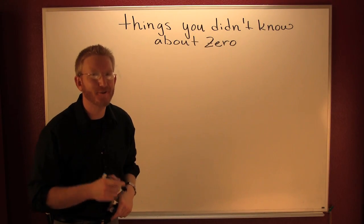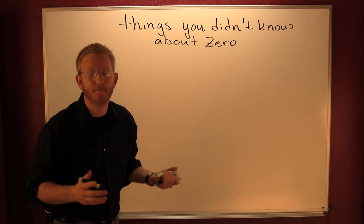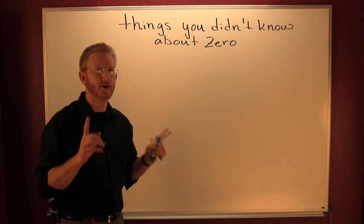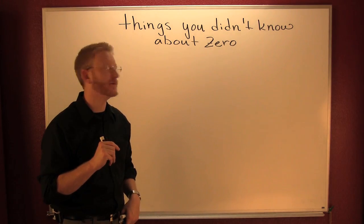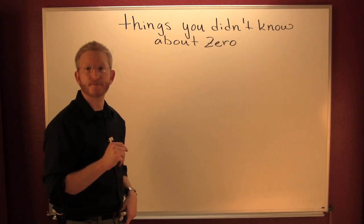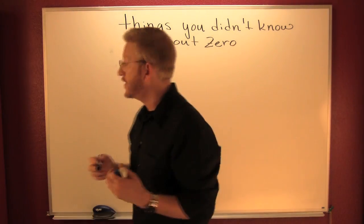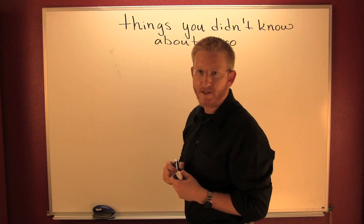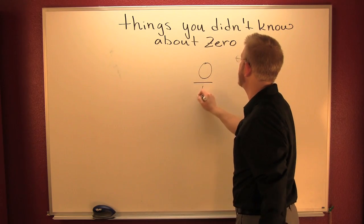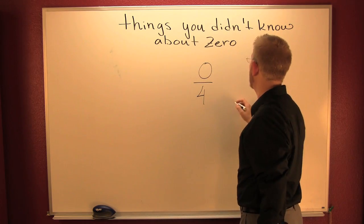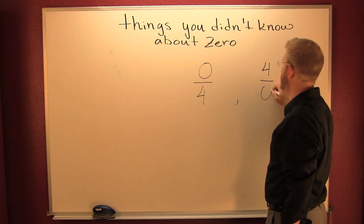There are a few things you probably may or may not have known about zero. I want to discuss them and how you're going to remember them. The first thing: one of these is zero and one of them is undefined — zero over four, or four over zero.